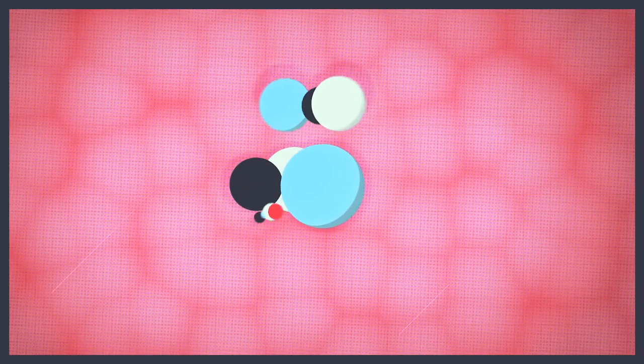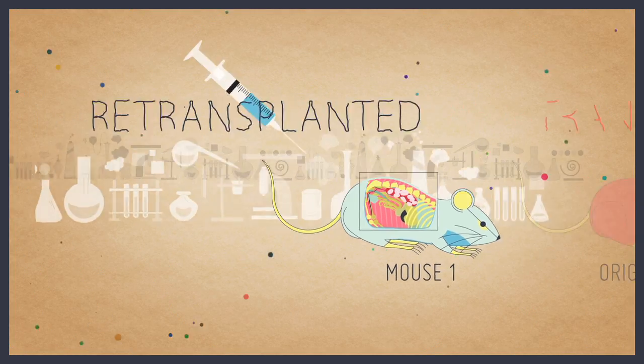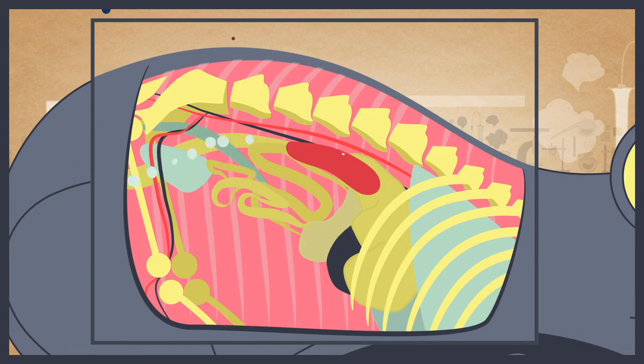These colonies contained a mixture of different blood cell types. Incredibly, when these colonies were removed and re-transplanted, these rare cells formed new colonies in the spleen of a second mouse.